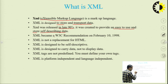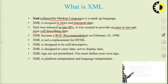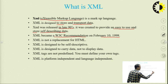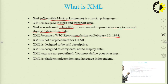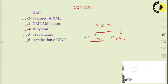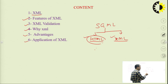XML is a part of W3C — the World Wide Web Consortium — standardized in February 1998. SGML has two parts: HTML and XML. XML is not a replacement of HTML. HTML is used to display data and XML is used to describe data.